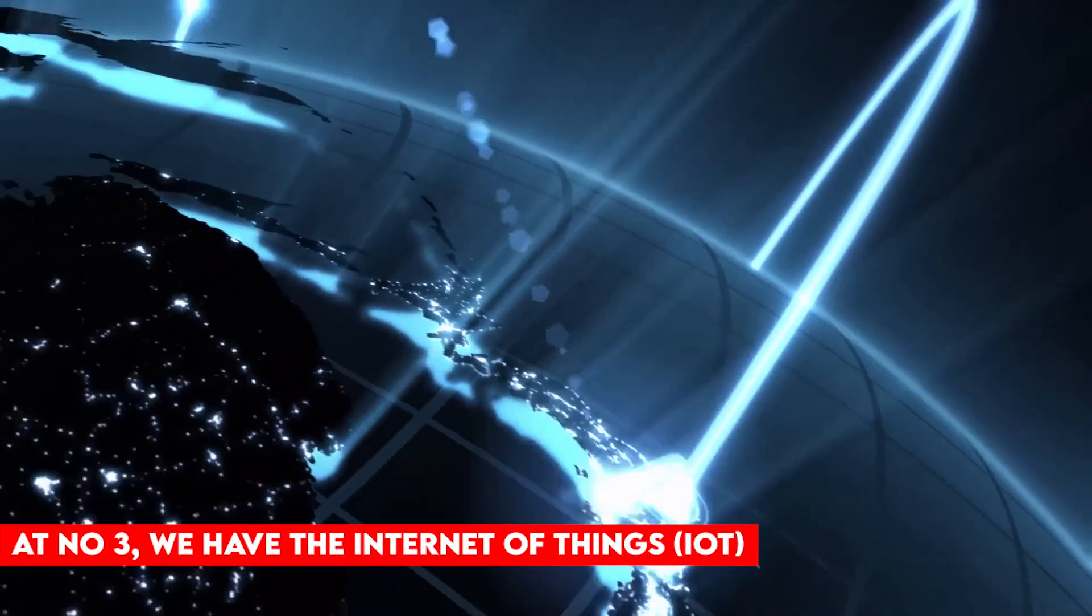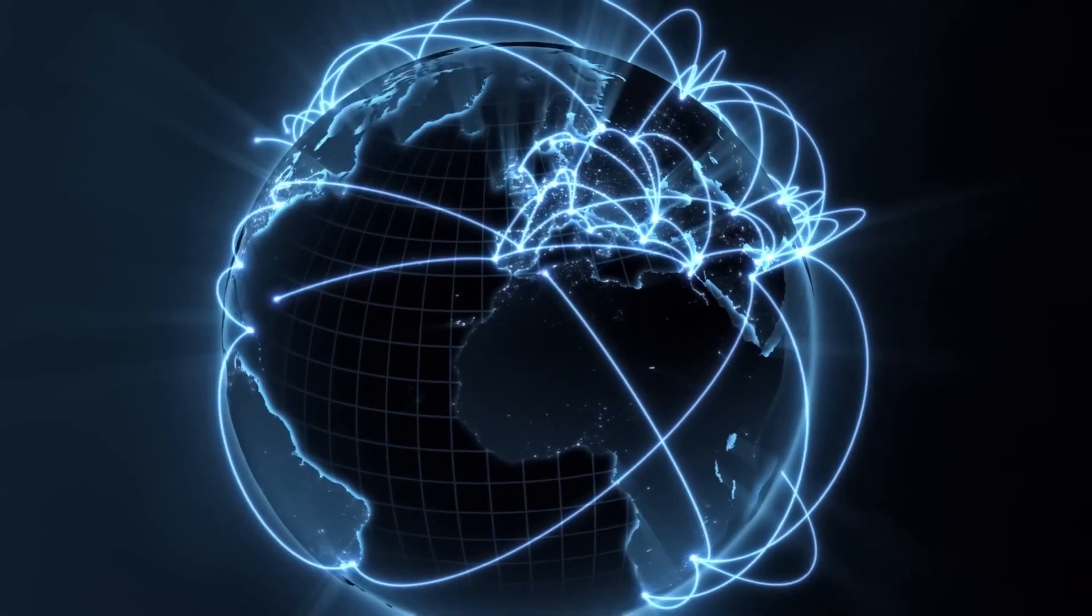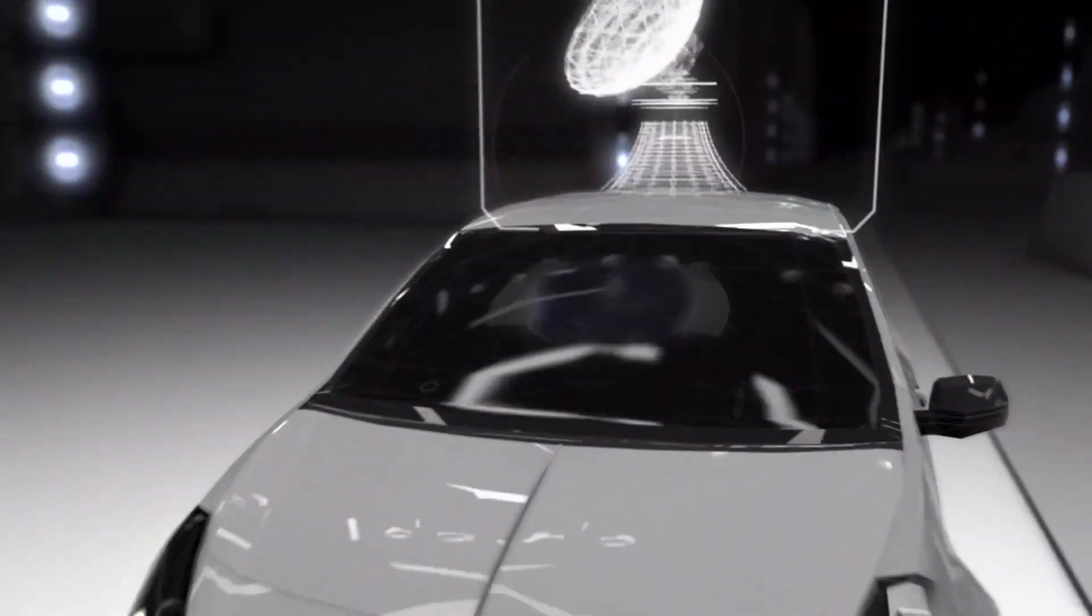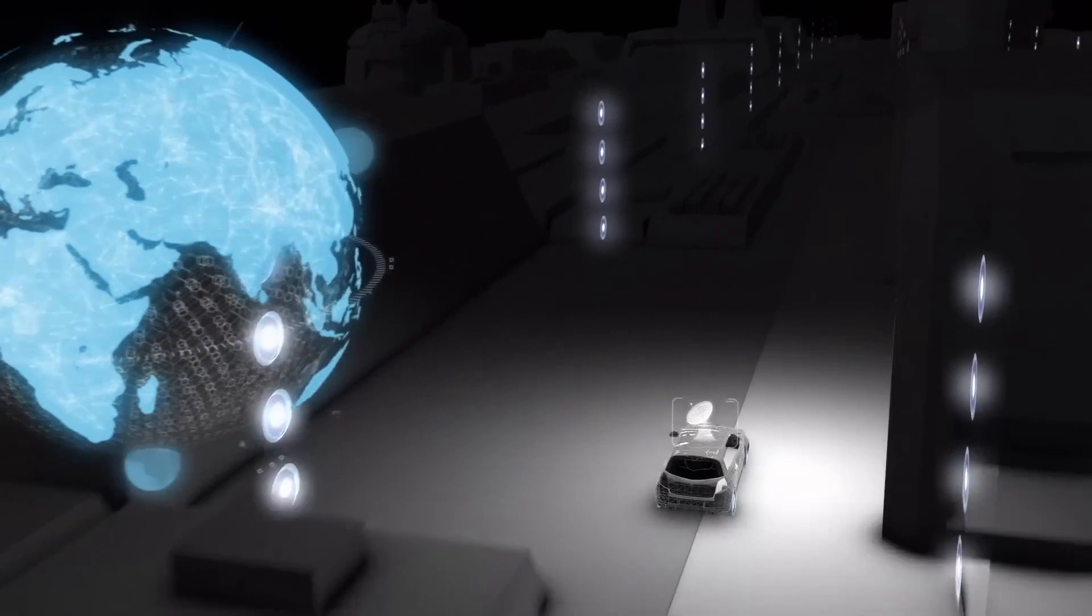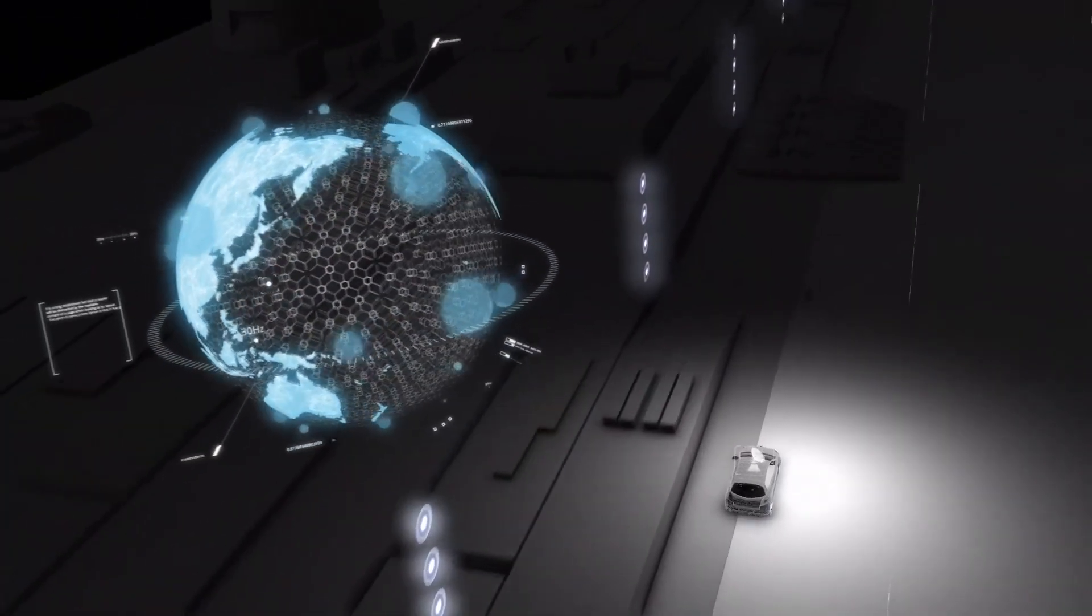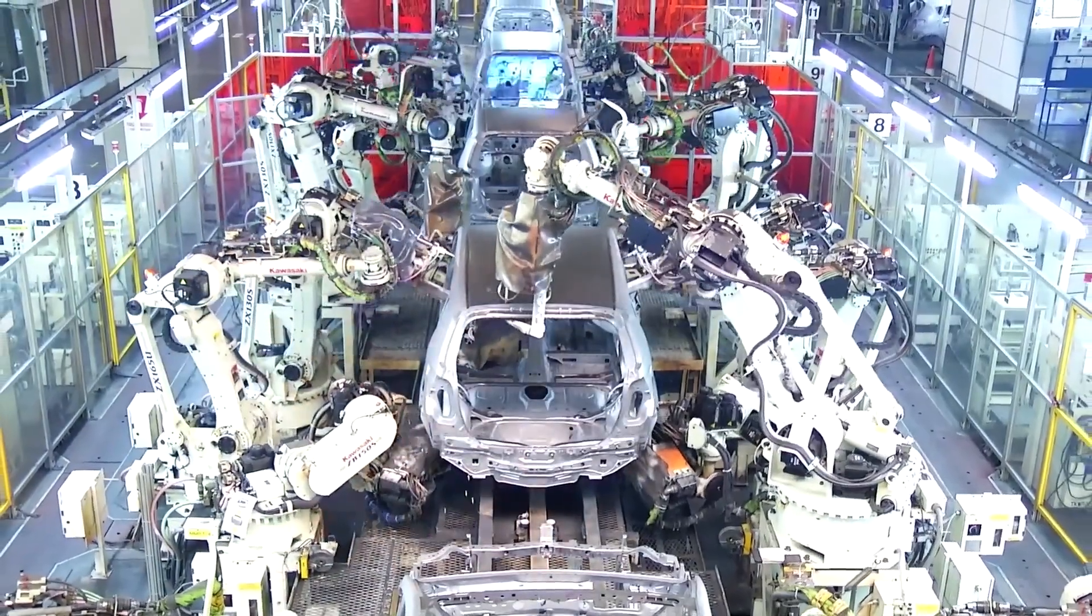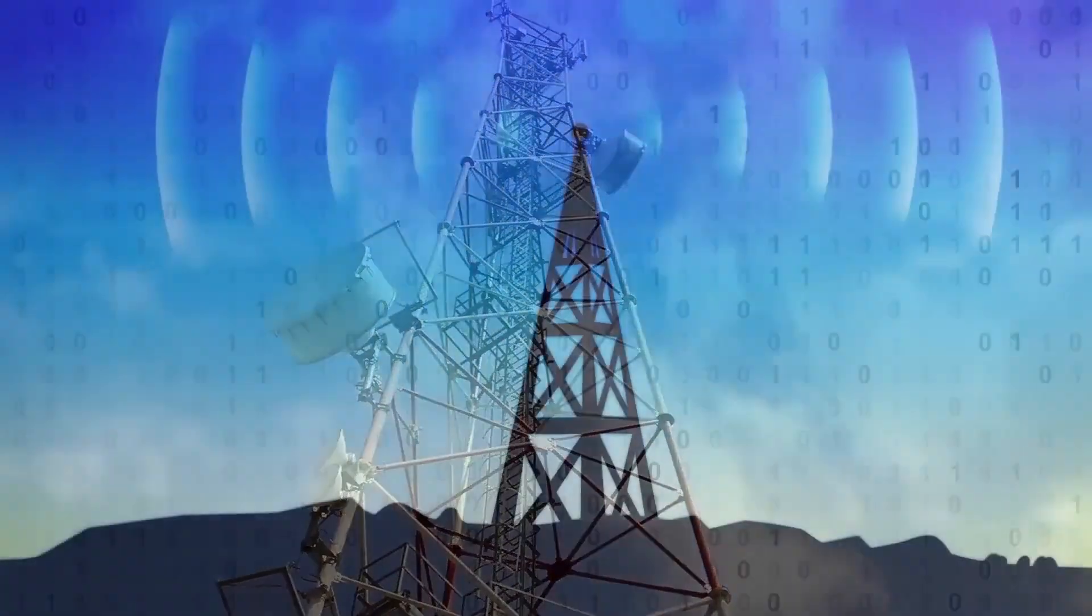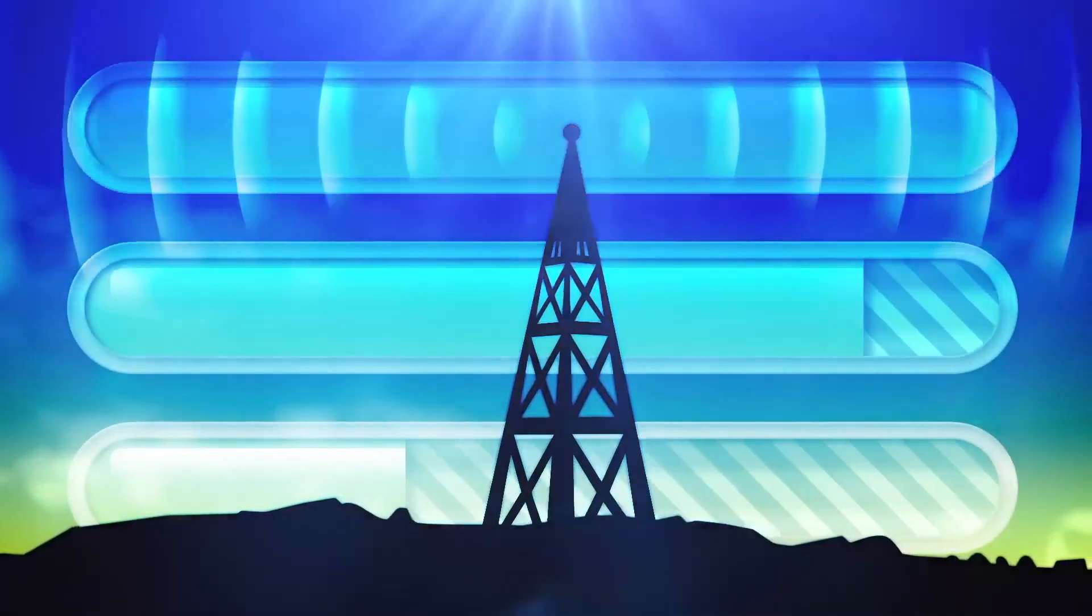At number 3, we have the Internet of Things. The concept of a network of interconnected smart devices was first discussed in 1982 with a modified Coca-Cola vending machine at Carnegie Mellon University, becoming the first Internet connected appliance. With the availability of inexpensive computer chips and high bandwidth telecommunication, we now have billions of devices connected to the Internet, collectively known as the Internet of Things. This means that everyday objects like toothbrushes, vacuums, cars and machines can utilize sensors to collect data and intelligently respond to users.